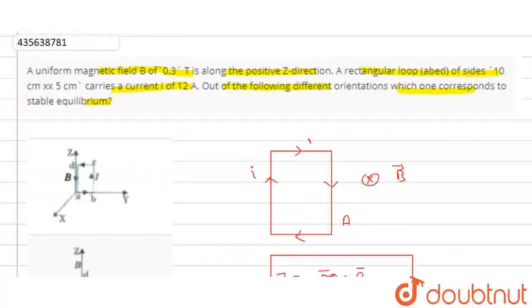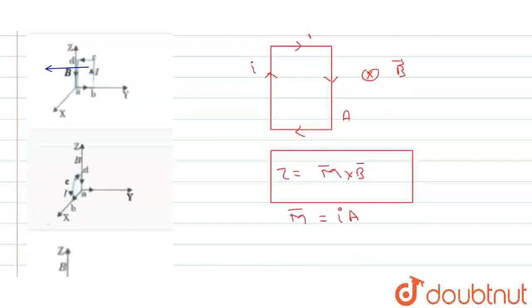Pehla wala option mein, current ka direction anticlockwise hai. Magnetic field positive Z direction mein hai. Magnetic moment ka direction aap ke plane se outward, aap ke taraf aega. Torque M cross B, torque direction kuch is taraf aega. Yani stable equilibrium nahi hai, torque zero nahi ho raha. Pehla option galat ho gaya.